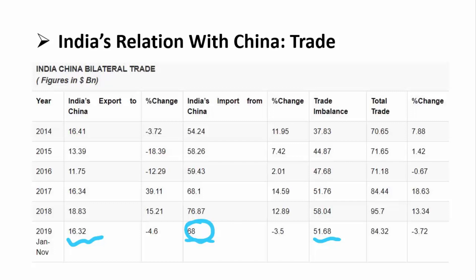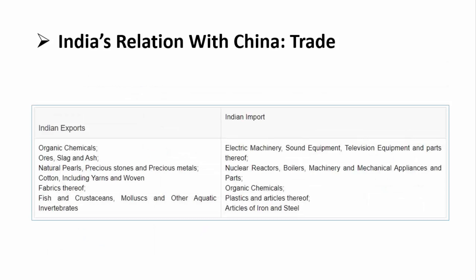India exports organic chemicals, ore slags, ashes, natural pearls, fabrics, fish, crustaceans, mollusks, and other aquatic invertebrates to China. Items from the fisheries sector are also exported. India imports electric machinery, electrical appliances, mobile sectors — which are very important — along with industrial machines, mechanical equipment, organic chemicals, and plastics from China. India also relies heavily on China for many IT services.